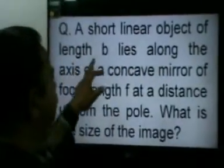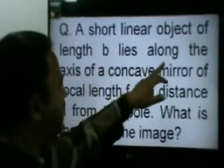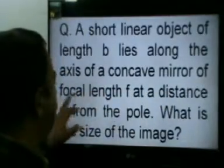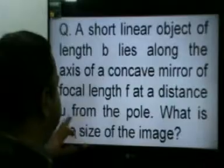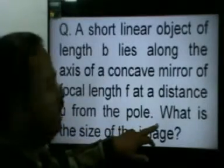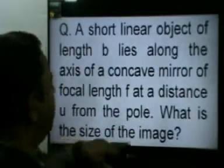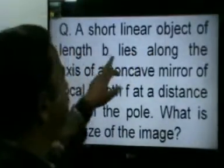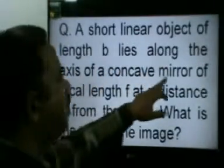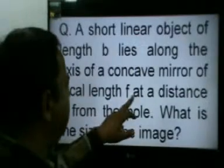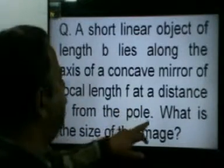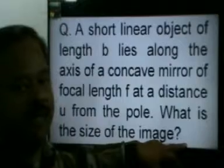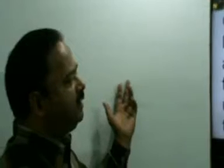A short linear object of length B lies along the axis of a concave mirror of focal length f at a distance u from the pole. What is the size of the image? We have a linear object of length B lying along the principal axis of a concave mirror.